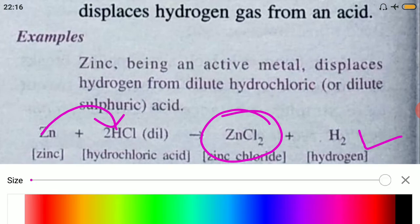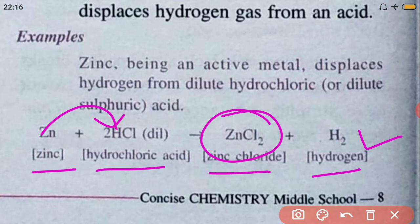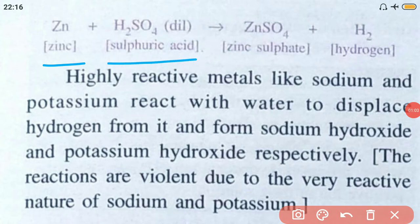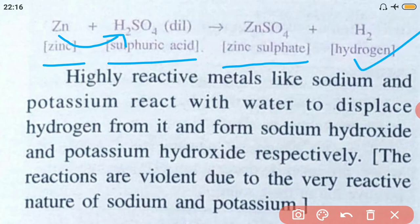You might notice that 2HCl is written in the equation — this comes from valency, so the formula is ZnCl₂, not ZnCl. When zinc reacts with sulfuric acid H₂SO₄, zinc displaces hydrogen and forms zinc sulfate, with hydrogen getting displaced.